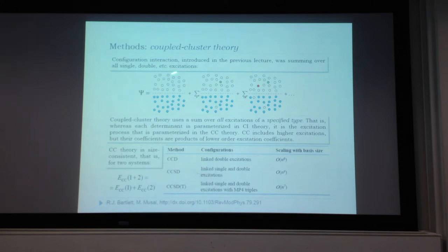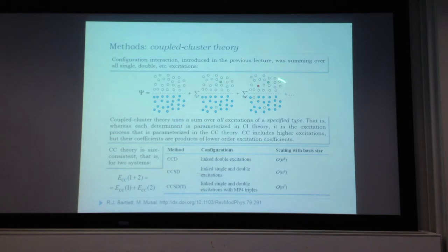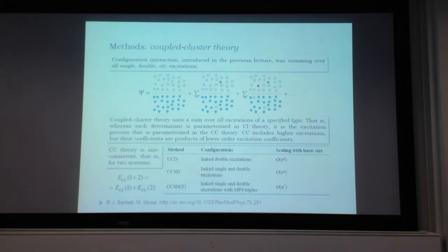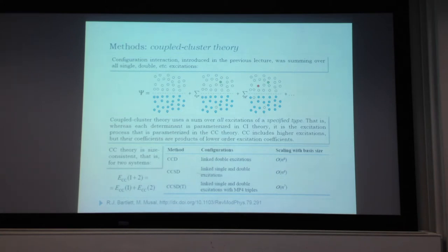Because it's computationally difficult to handle even one determinant in a large system, when we take more determinants the numbers grow rapidly. The number of single excitations is already significant in a large molecule; the number of double excitations is even bigger. The computational complexity grows very rapidly as a function of the excitation level included. We also face the problem that configuration interaction is not size consistent.